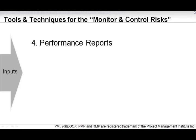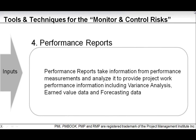Performance reports take information from performance measurements and analyze it to provide project work performance information, including variance analysis, earned value data, and forecasting data. Earned value data only applies if you are using the earned value method on your project. These project performance metrics tell you where you are in terms of project performance, and project progress is important because some risks may be contingent on certain deliverables being completed or certain phases being reached. You need to know how far along you are to reach the different risk triggers you may have defined.